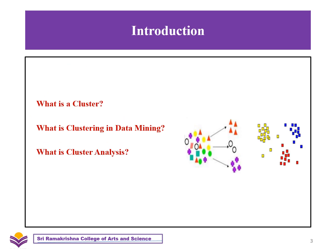Now let us see what a cluster is. A cluster is a subset of similar objects — a subset of objects such that the distance between any two objects in the cluster is less than the distance between any object in the cluster and any object that is not located inside it. Look at the figure. You can see a group of various shades in different colors like red, yellow, green, purple, etc., and similar shades grouped together on the right. Here, red color triangles are grouped as a subset of object shades.